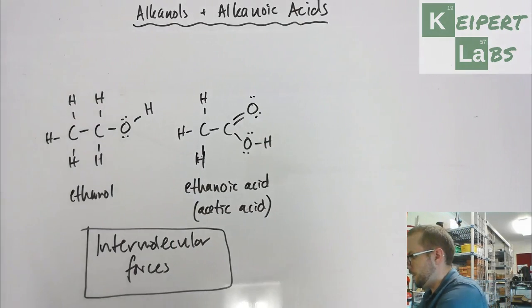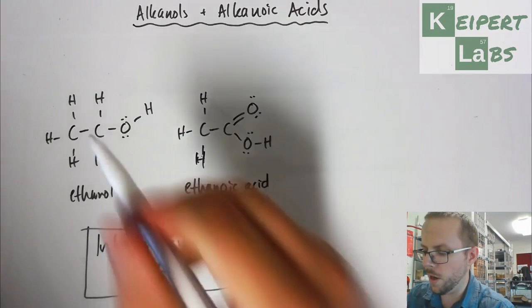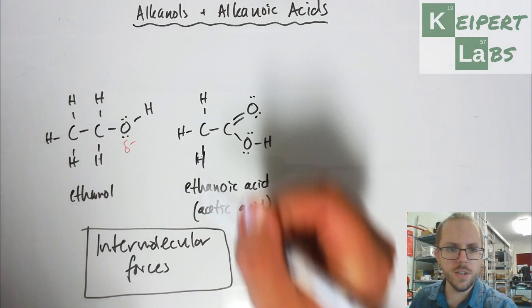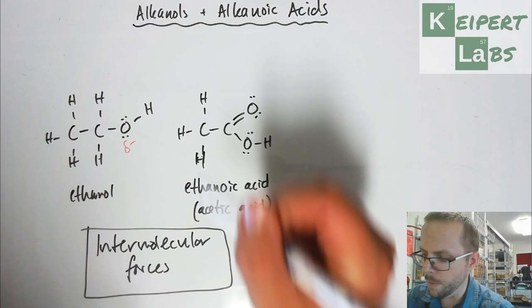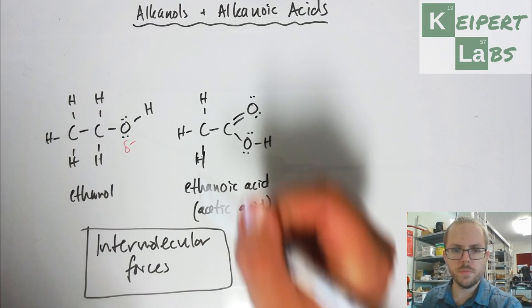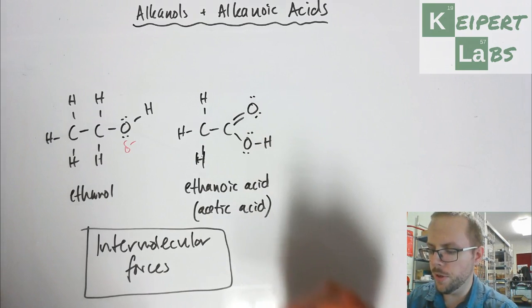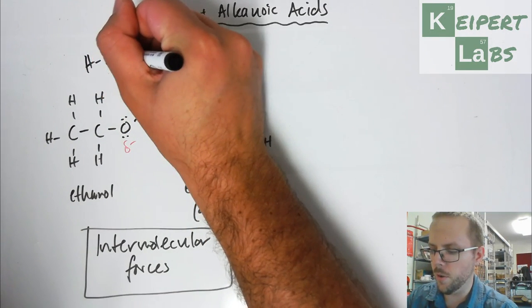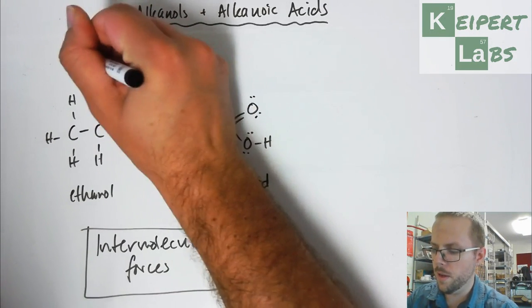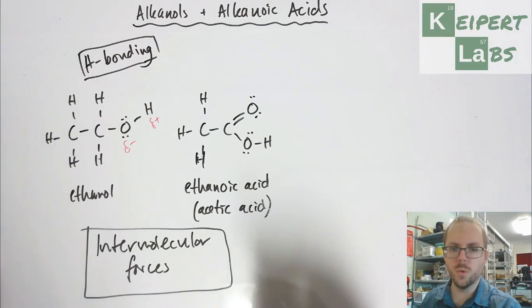We know that because we have this OH group here, this OH bond is polar. We have a negative end for our oxygen and we have a positive end for our hydrogen. What that means is that we can get hydrogen bonding. This can undergo hydrogen bonding with itself and it can also undergo hydrogen bonding with other things like water.